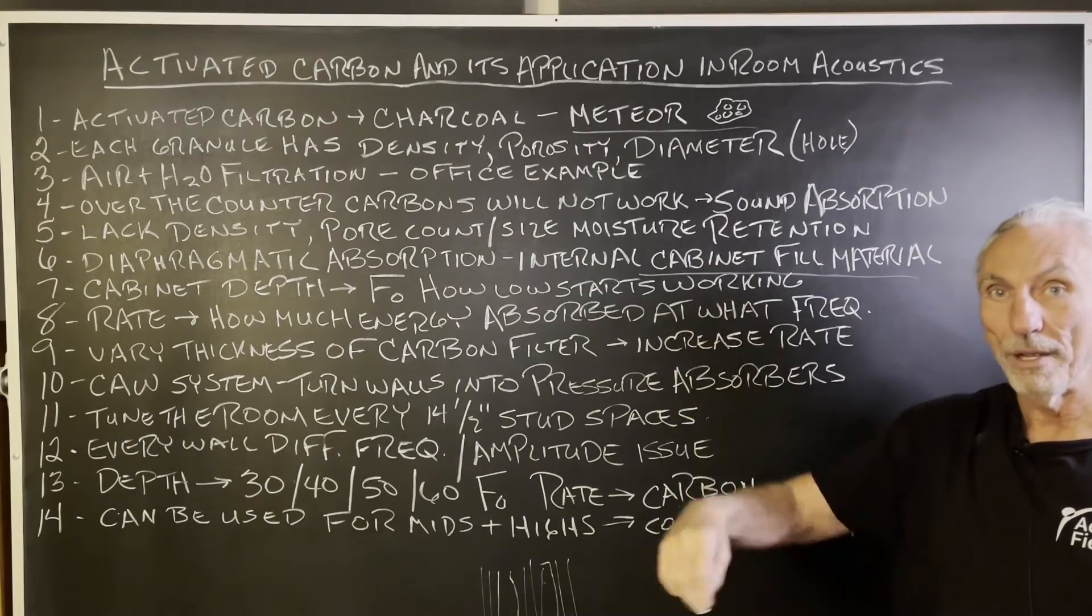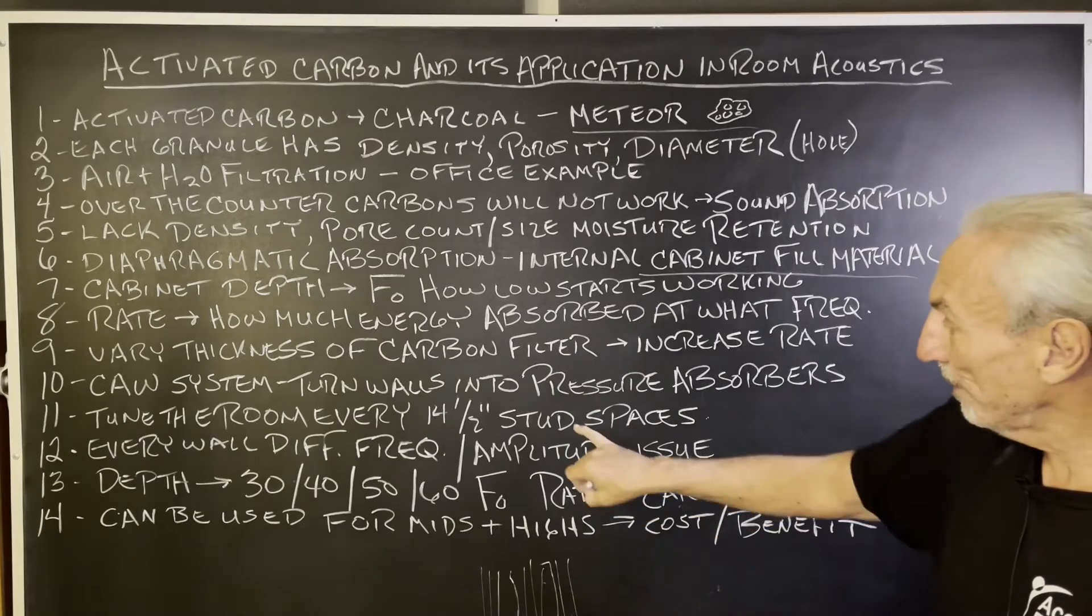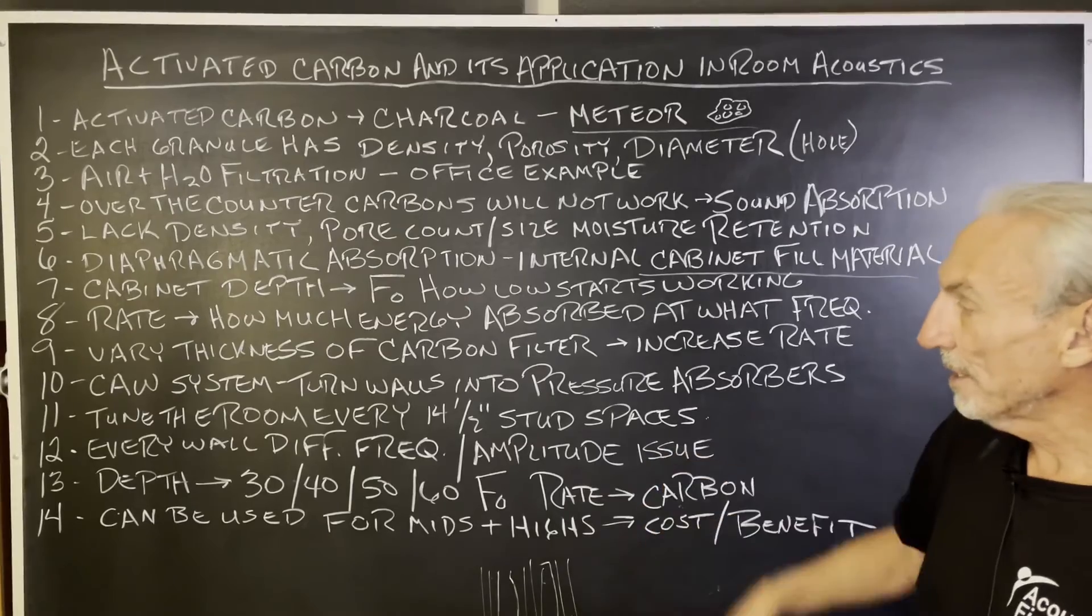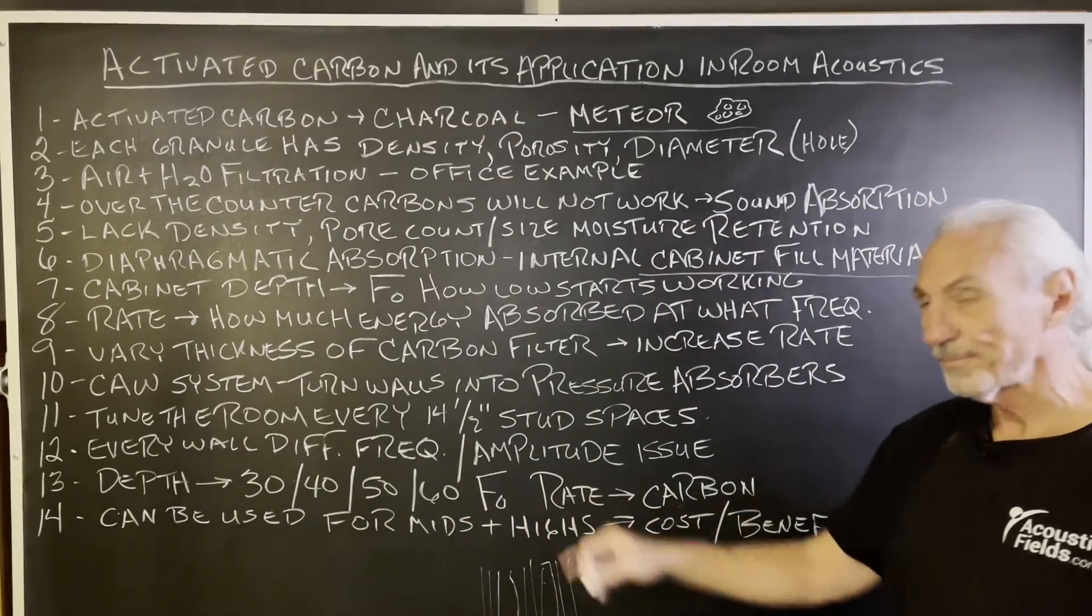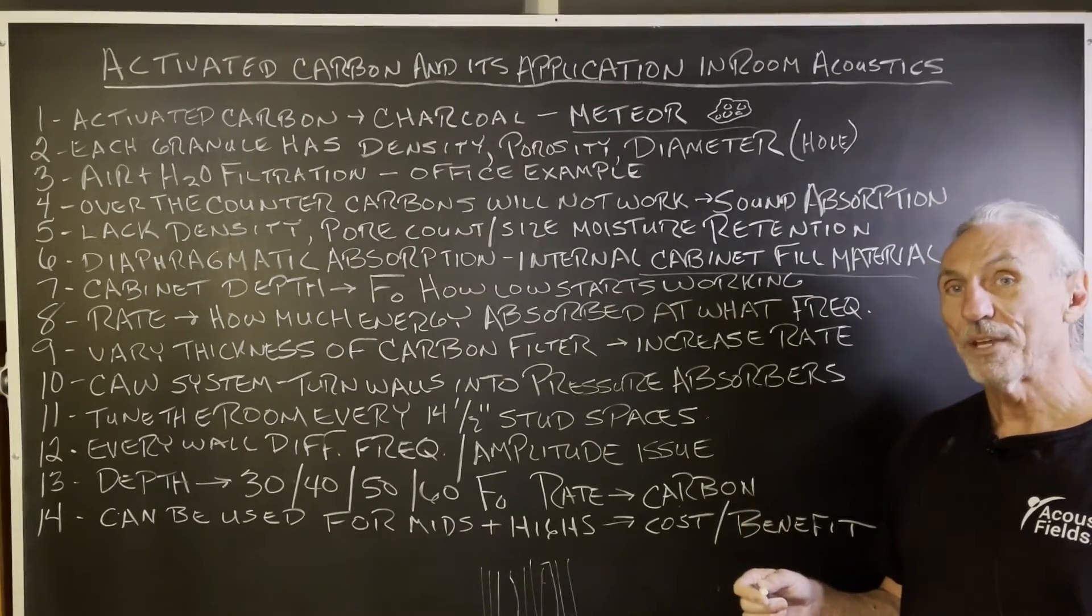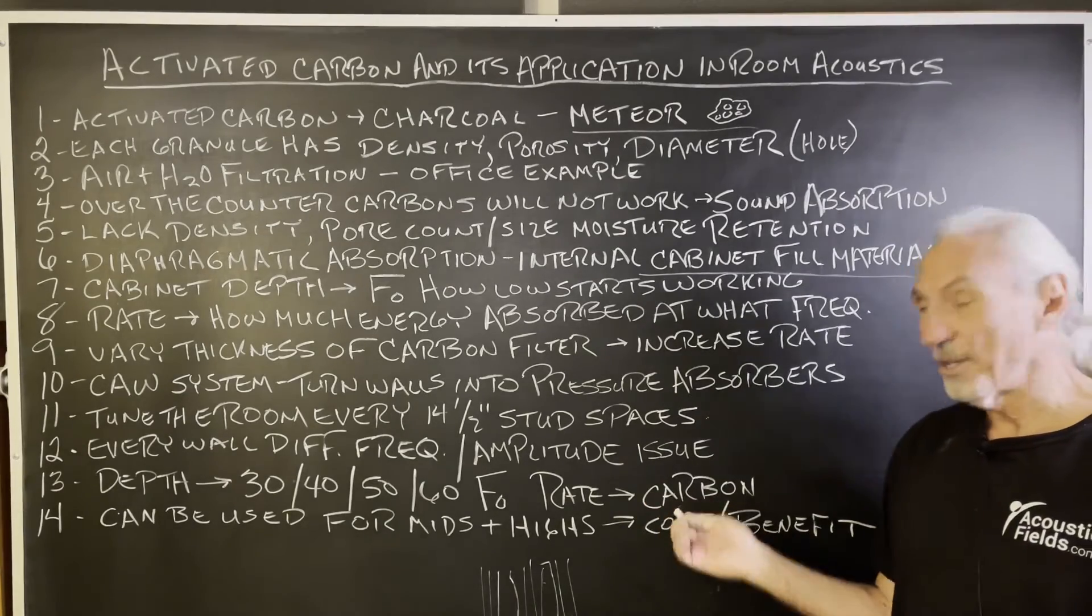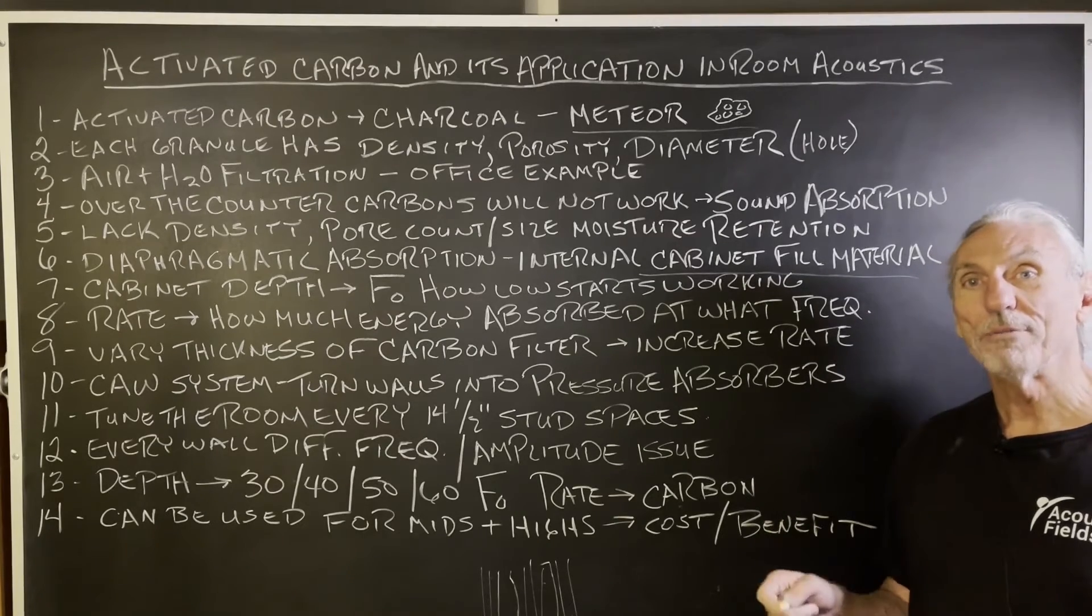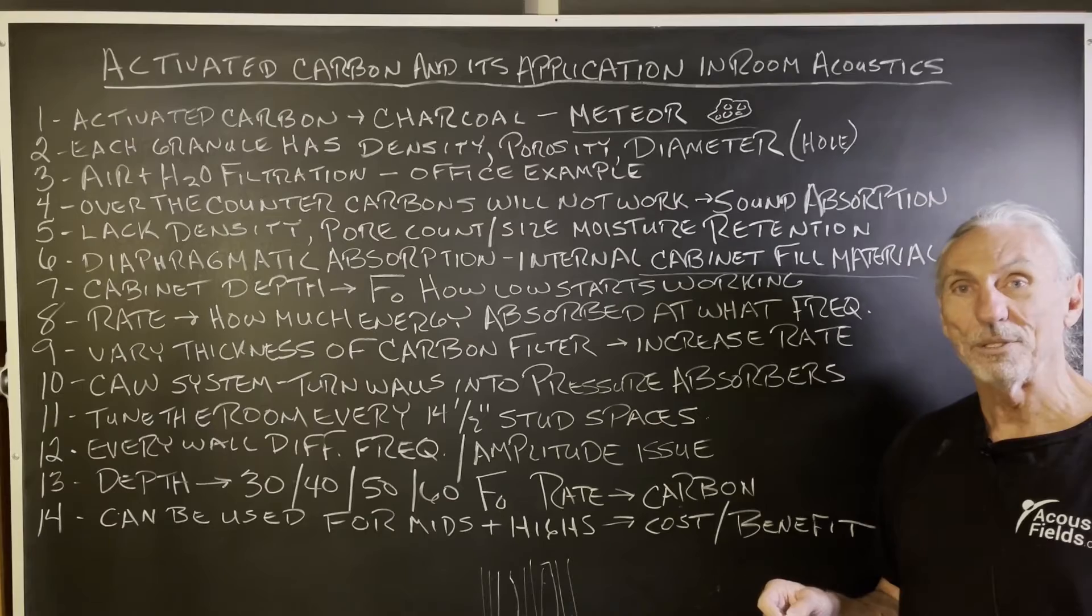You need a lot of square footage of coverage when you're dealing with low frequency pressure waves. Remember, they're like ocean waves. They're slapping against the walls constantly. So when we have the ability to go after the frequency and amplitude every 14 and a half inches, we really can tune it. So 30, 40, 50, 60 hertz, you're needing 10, 11, 12 inches of cabinet depth to get down into those frequencies. And then you add the carbon and that controls the rate.